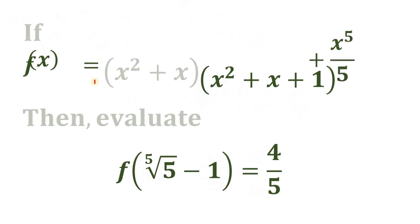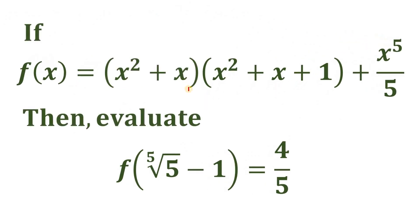Therefore, if f of x equals x squared plus x, multiplied by x squared plus x plus 1, plus x to the 5th power over 5, and we substitute x equals the 5th root of 5 minus 1, we get f of the 5th root of 5 minus 1 equals 4 over 5. And as always, we are done.